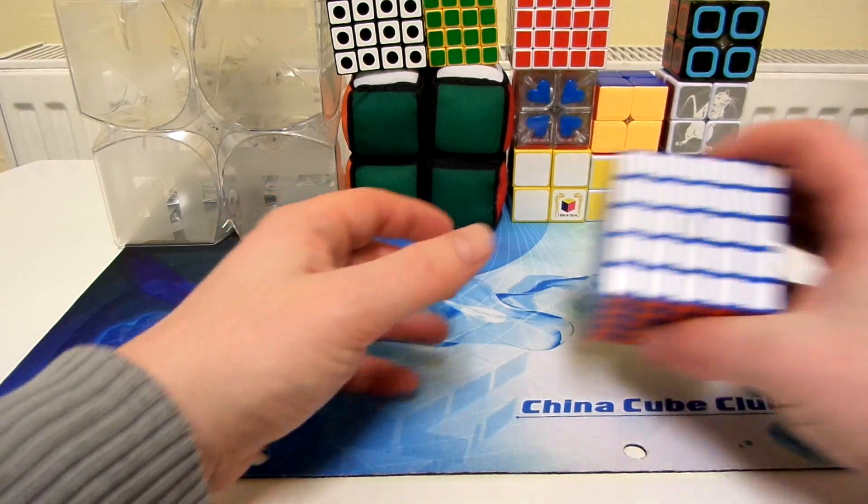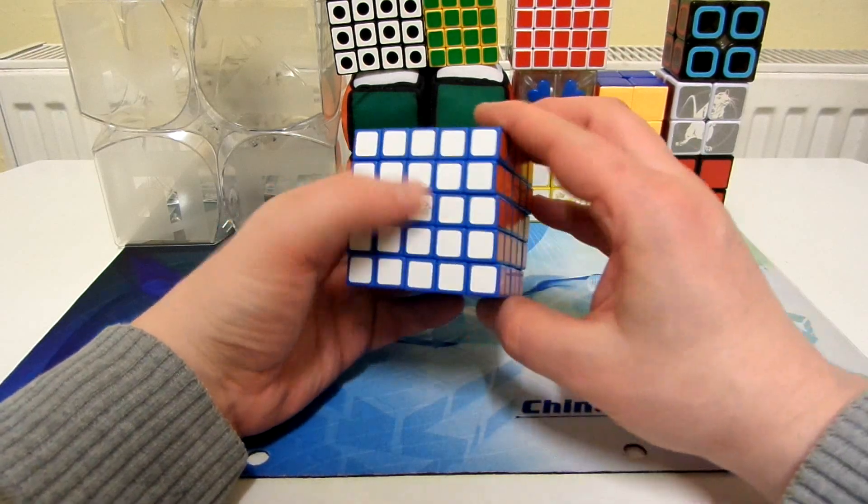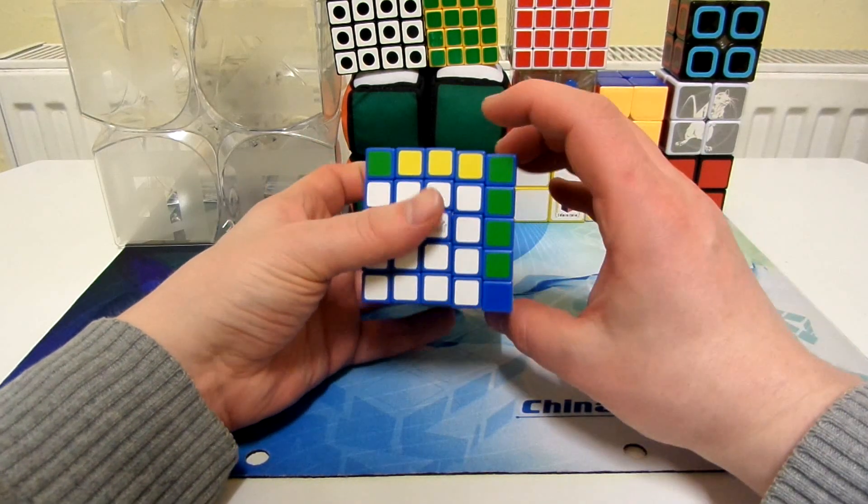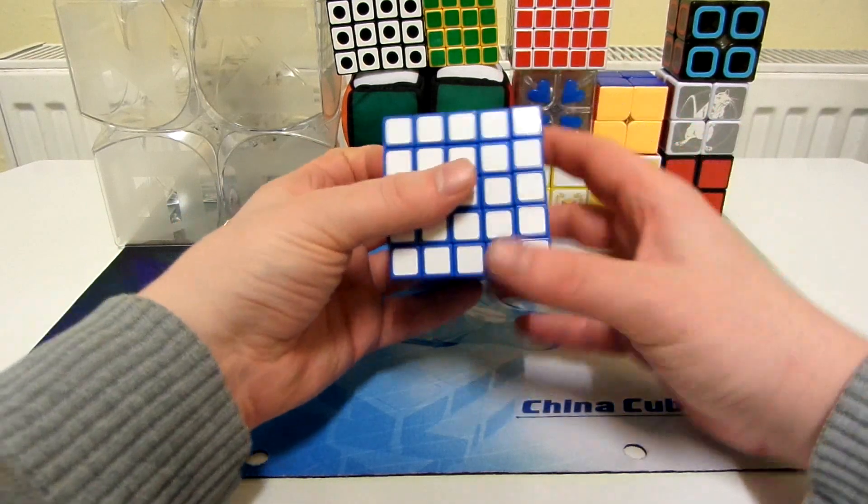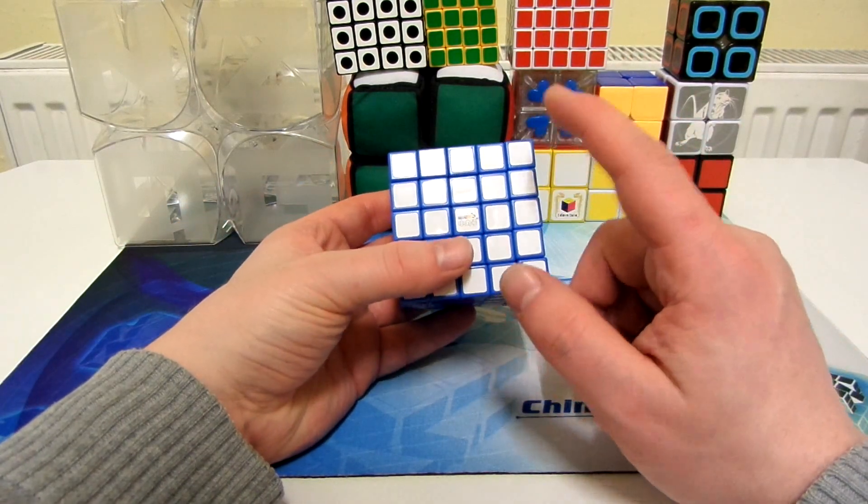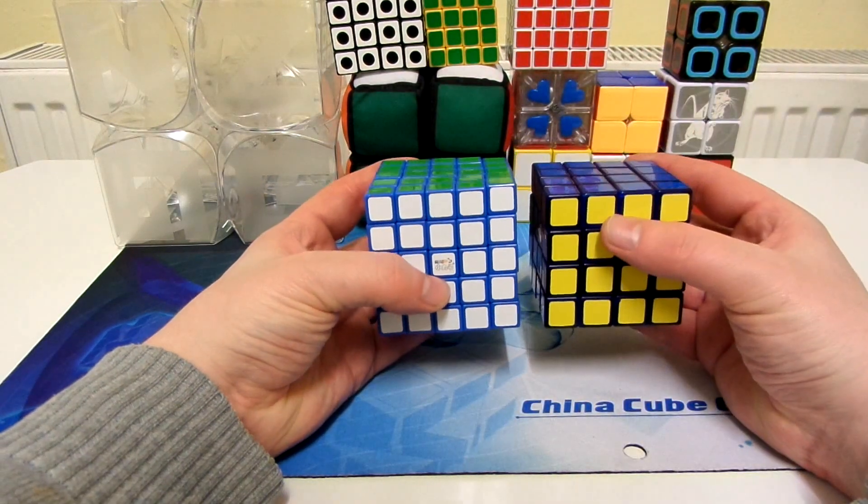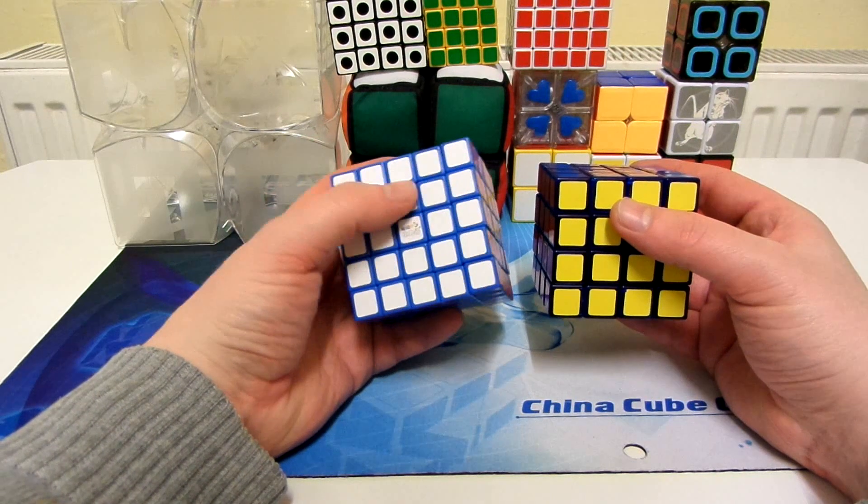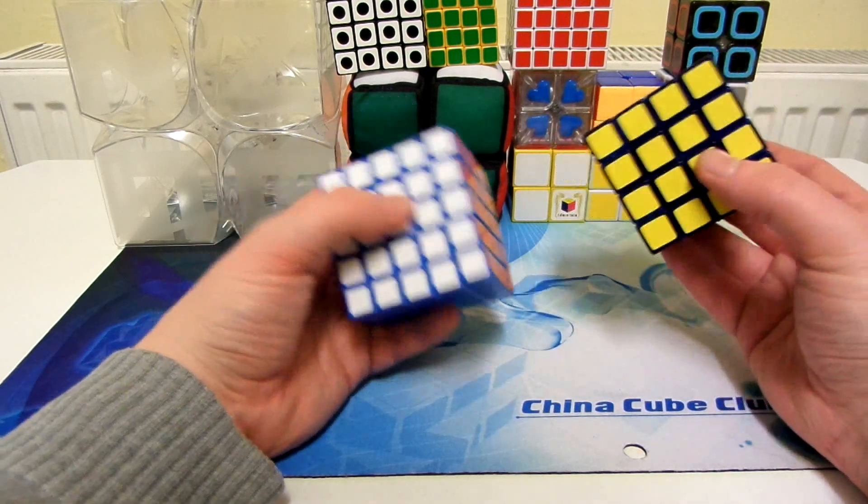And then we've got this Maru 5x5. It doesn't really have the best turning, but I just really like the way it feels. The outer layers really aren't too bad at all. In fact, it's strange how this actually turns a lot better than the Maru 4x4. You would think, because this has got more pieces, you would think it would turn worse than the 4x4, but it doesn't.